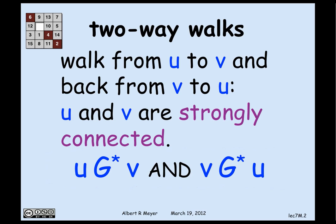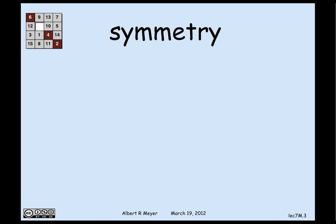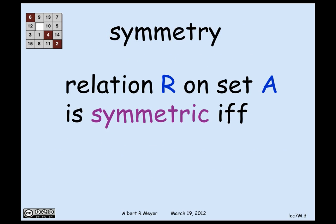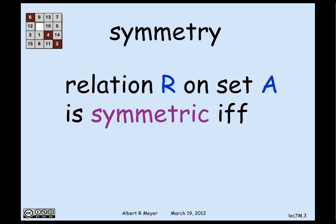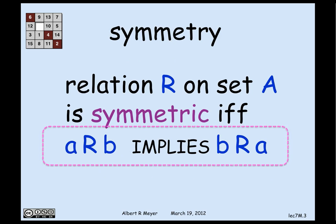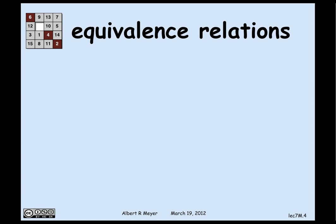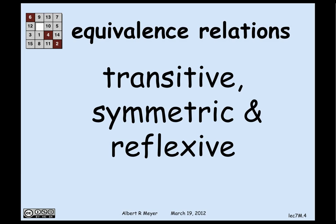As a property of relations, this has a name — it's called symmetry. A relation R on a set A is symmetric if and only if a R b implies b R a. The first remark is that the strongly connected relation is symmetric. An equivalence relation is a symmetric relation that is also transitive and reflexive.